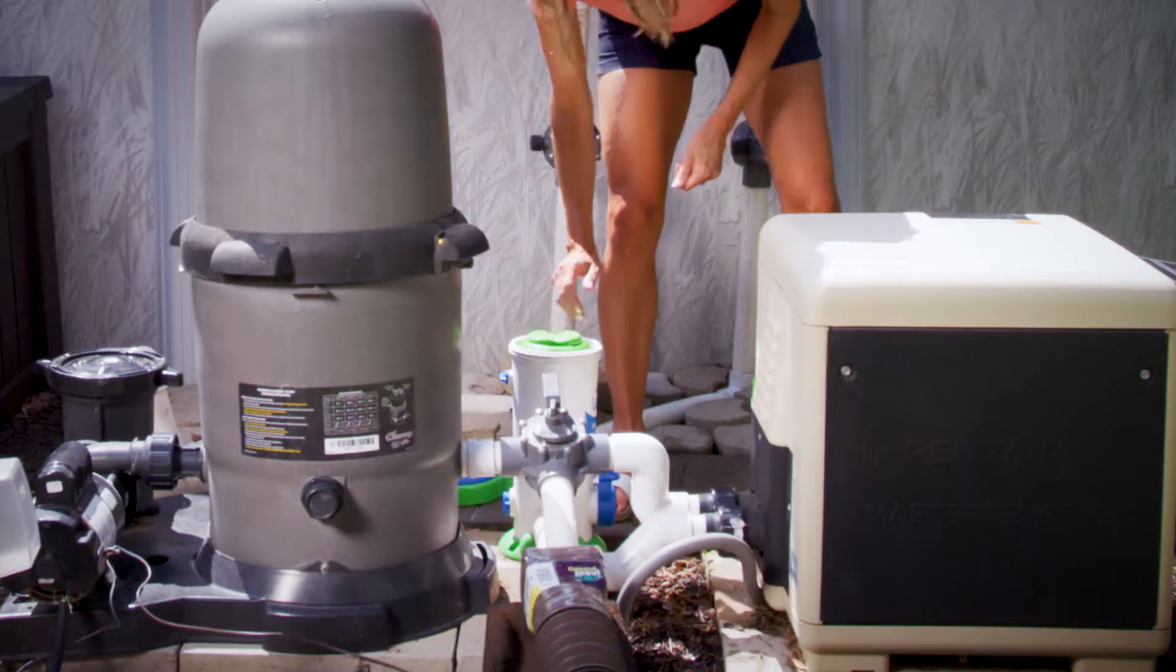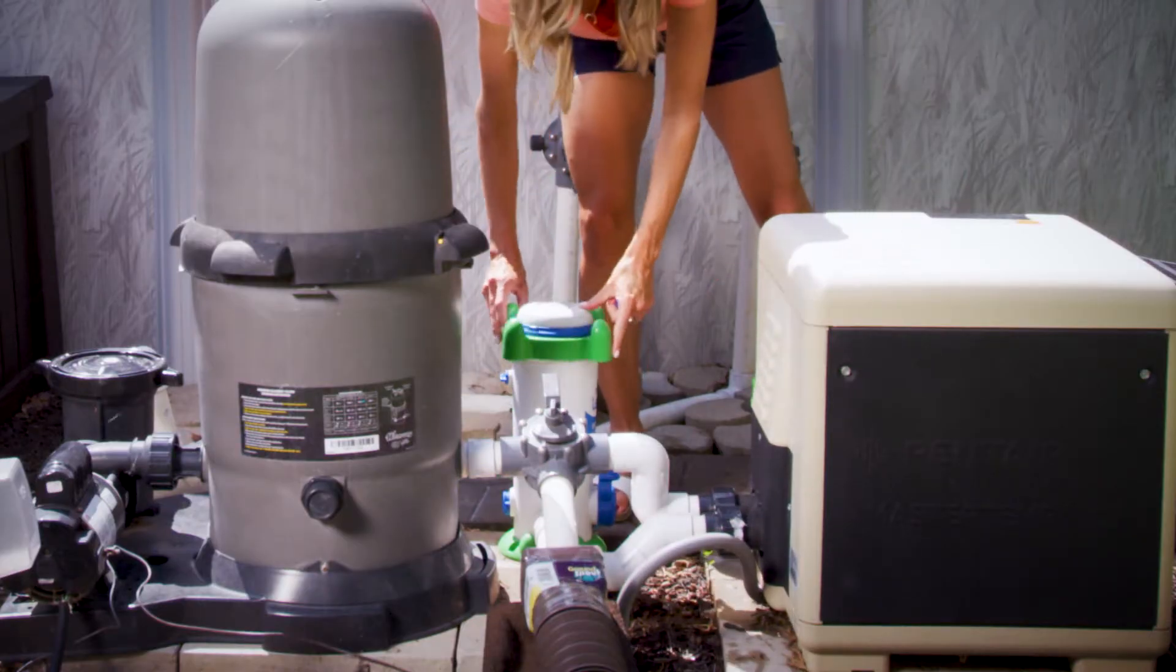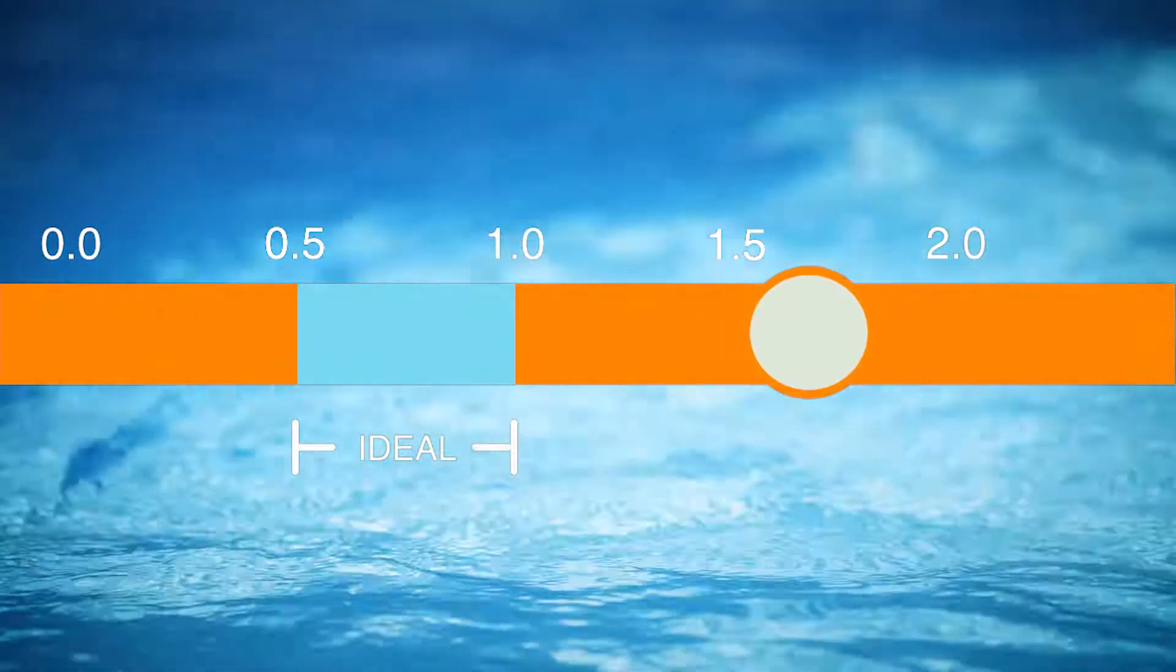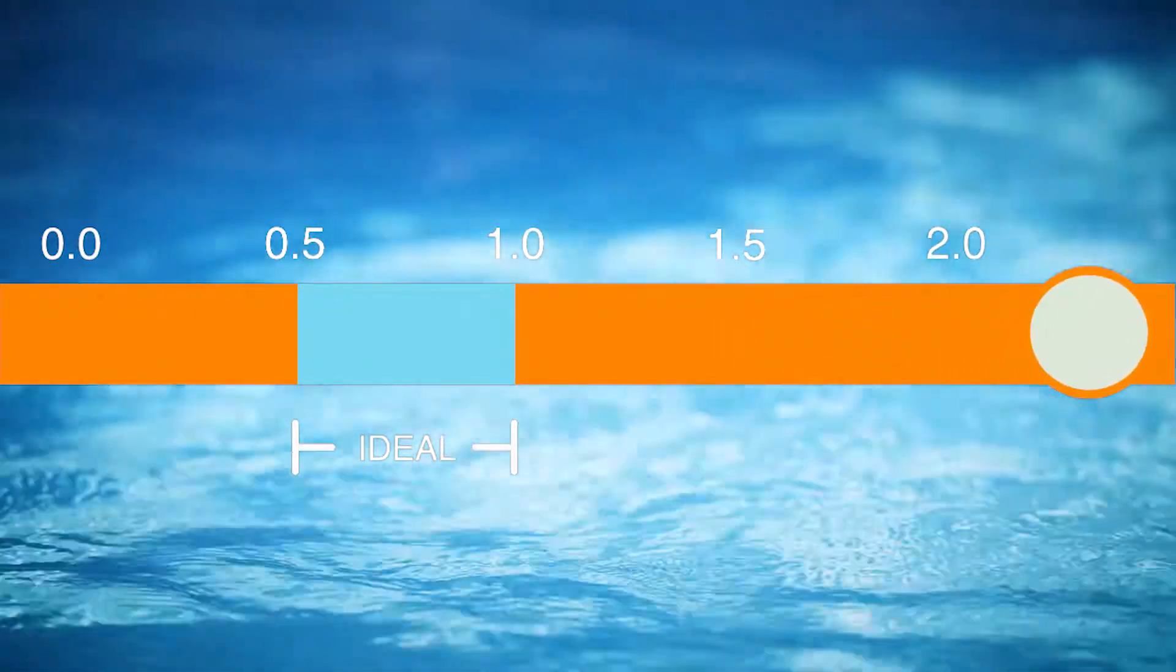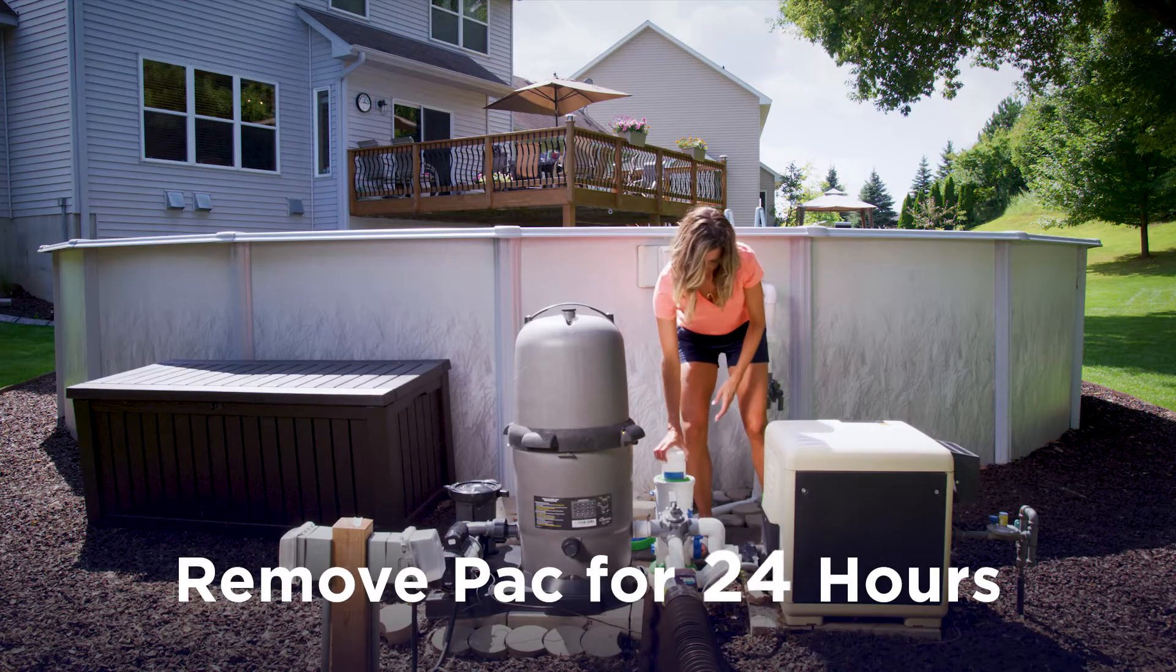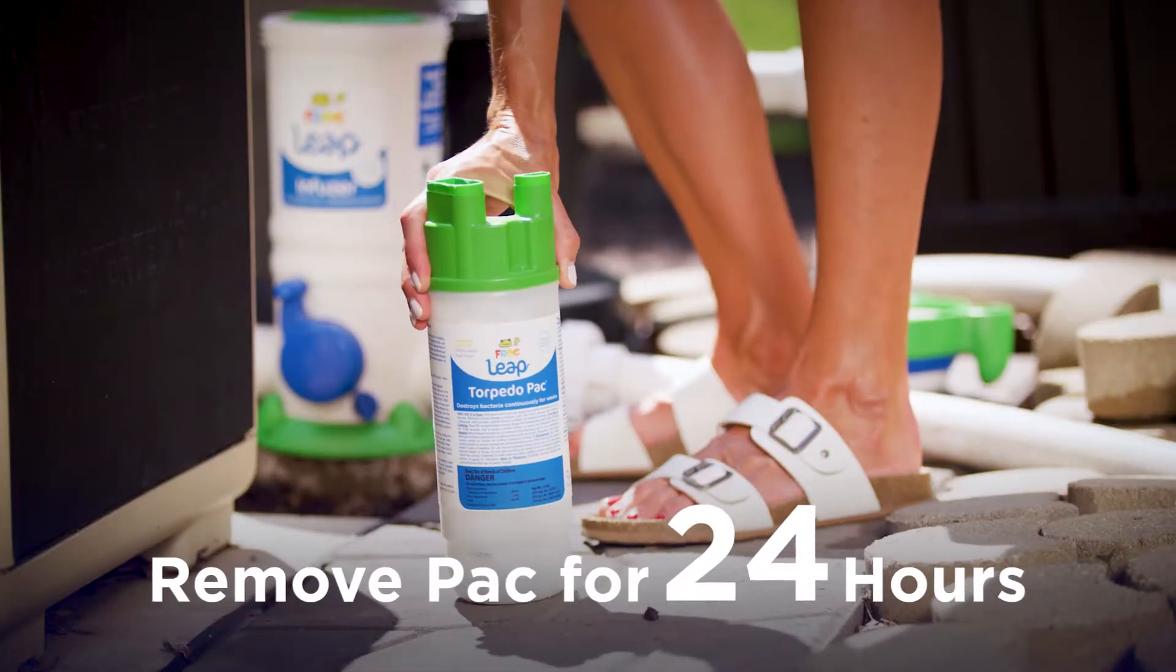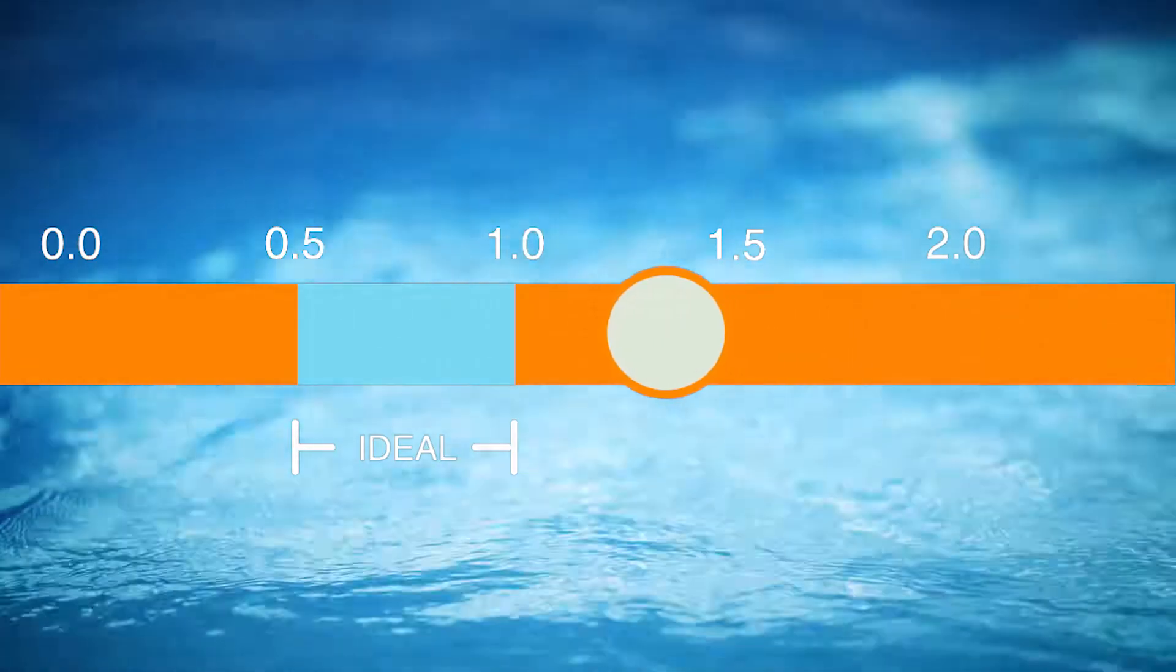Now if your chlorine level is quite high, above 3.0 ppm, take the chlorine pack out of the FROG system for 24 hours or longer until the level drops down to 1.0 ppm.